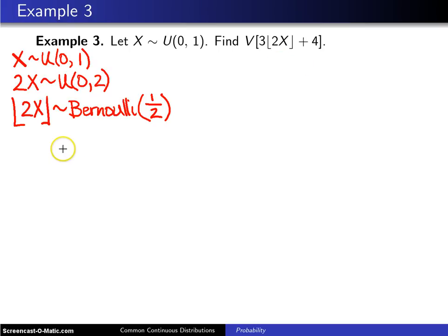Now at this point, we can start to work on the problem at hand, which is the variance of 3 times the floor of 2X plus 4.